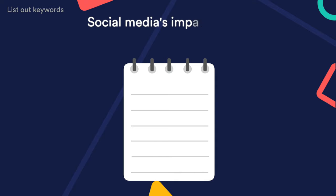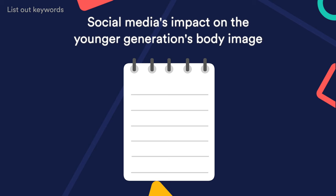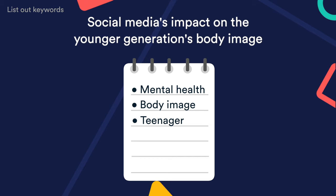So obviously you're searching for literature related to your topic. Start with creating a list of keywords on your topic. For example, our topic is social media's impact on the younger generation's body image. So our list of keywords could be mental health, body image, teenager, social media, Facebook, Instagram.